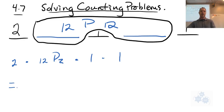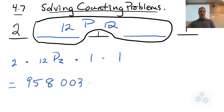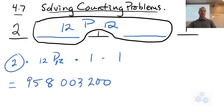So what is that number? About 958 million — actually, I meant to put 12 there, sorry, that's my mistake. Yes, it should be 12. So it's 2 × P(12, 12). So we've kind of got 2 times 12 pick 12 times 1 times 1, and that's the answer.